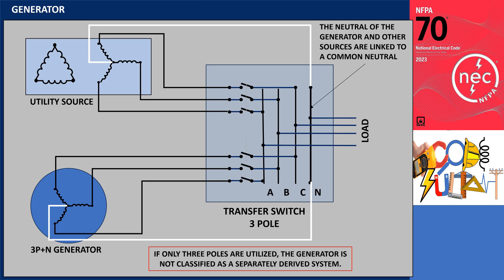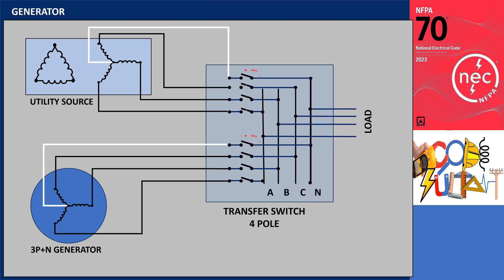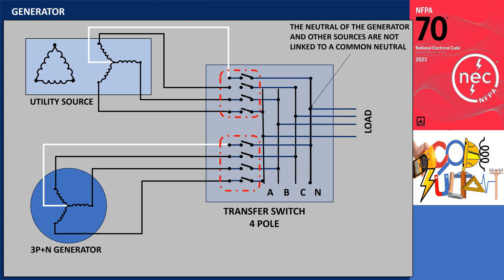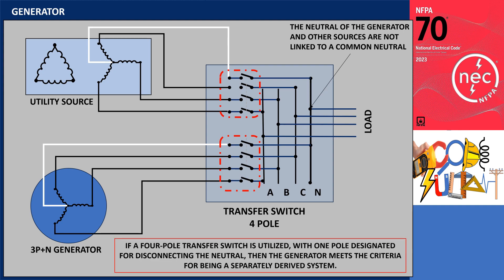If only three poles are utilized, the generator is not classified as a separately derived system. However, if a four-pole transfer switch is utilized — with one pole designated for disconnecting the neutral — then the generator meets the criteria for being a separately derived system.